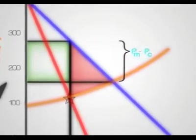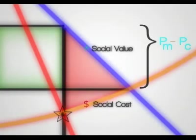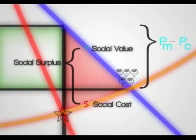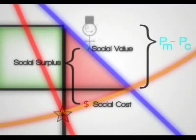Since the social value of the unit of output is represented by the price, and the cost to society of producing that output is the marginal cost, the difference between the two represents the social surplus of that unit. Moving from the competitive price to the monopoly price loses the potential social surplus that is contained in the red sections, where the price, the social value of that unit, is higher than the marginal cost, the social cost of that unit.